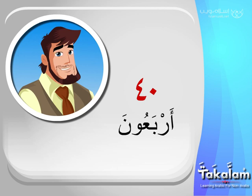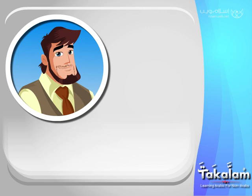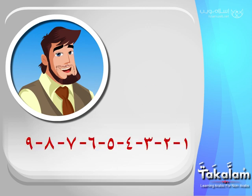To give the numbers between 30 and 40, it is the same way as between 20 and 30. You just add the numbers from واحد till تسعة, plus the article و which means 'and', and the number ثلاثون or أربعون or whatever number comes after.